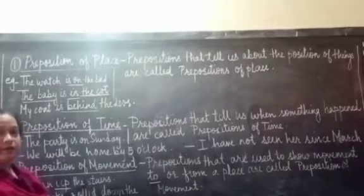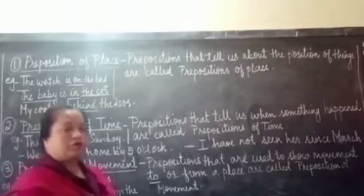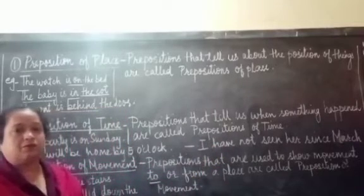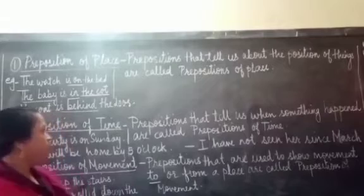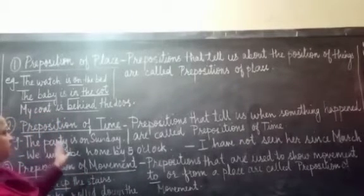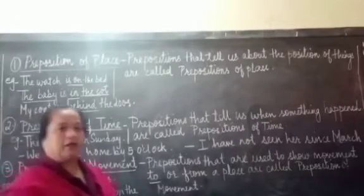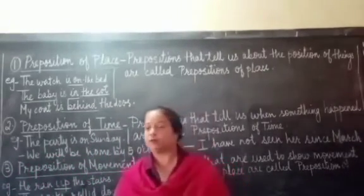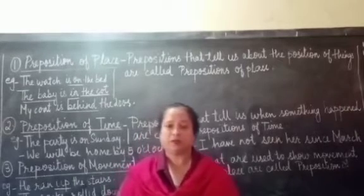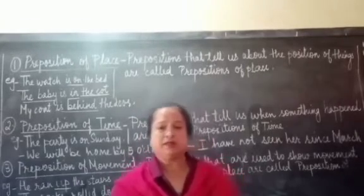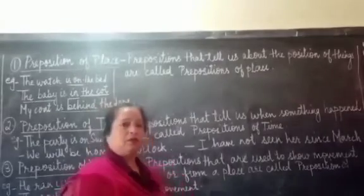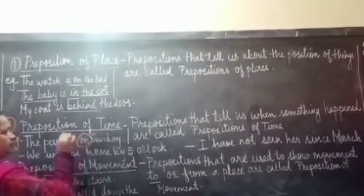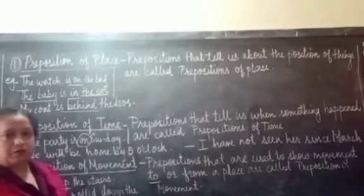What do we understand by preposition of time? Prepositions that tell us when something happened are known as prepositions of time. For example: The party is on Sunday. We are talking about two things — a day, which is Sunday, and the party. This tells us when the party is going to be, so 'on' becomes the preposition of time.